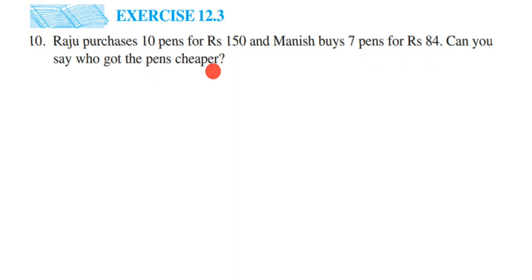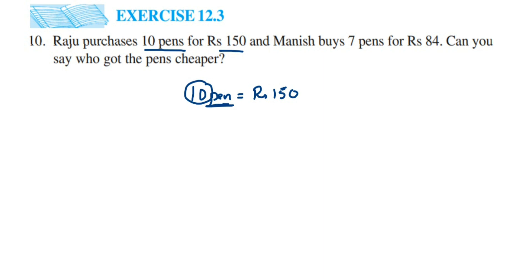So how to do this? It's given in the question itself that 10 pens is equal to Rs. 150. I am going to explain it for Raju's case first. So 10 pens equals Rs. 150. To find out the cost of one pen, you have to transpose 10 to the other side. So one pen will be 150 divided by 10. It's very simple — you just equate them and you understand which number to divide with what.